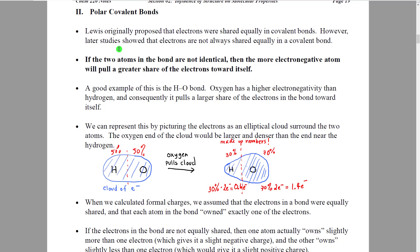However, when scientists started looking at the math and the other aspects of bonding theory, what they discovered was that electrons are not always shared exactly equally in a covalent bond. If the two atoms in the bond are not identical atoms — in other words, not the same element — then the more electronegative atom would pull a greater share of the electrons toward itself.